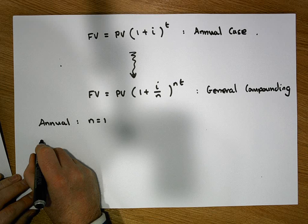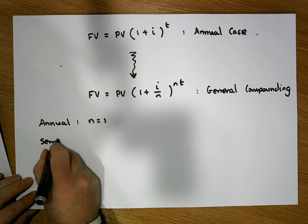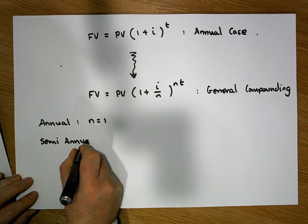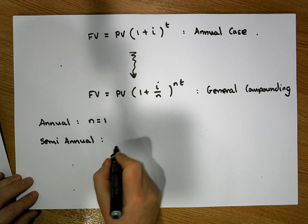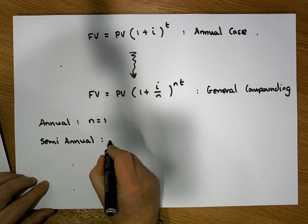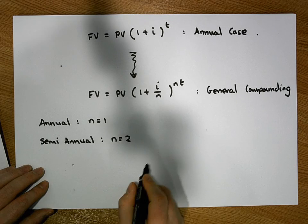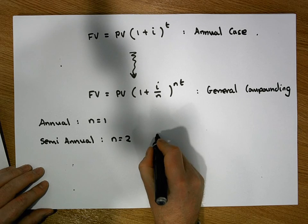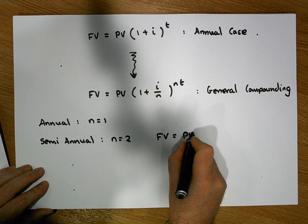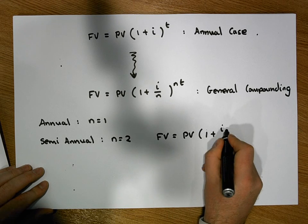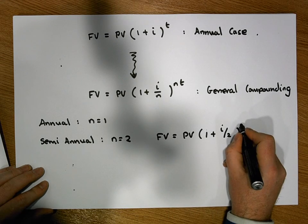Let's say we have semi-annually. Semi-annually means, the semi-annual case means that there's two compoundings in a period of time. So N is equal to 2. So this formula would be, the future value is equal to the principal value times 1 plus I over 2 raised to the power of 2 times T.